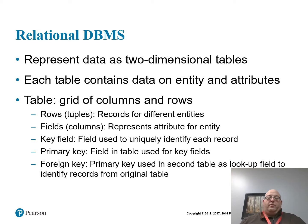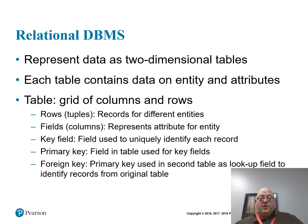The relational database is built on how two-dimensional tables relate to each other. Each table has data and attributes, built up like rows and columns just like in Excel. Rows are called tuples. Key fields are used to uniquely identify a record. A primary key enforces uniqueness and is used to create relationships from one table to another. A foreign key is a primary key used in a second table to create a relationship.